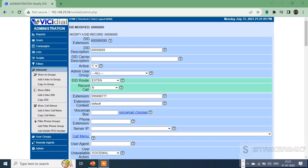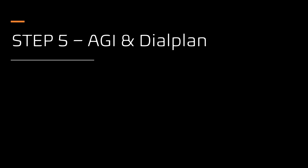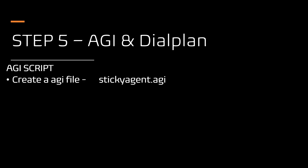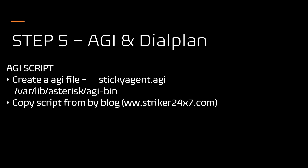Step 5: Creating the AGI script and custom dial plan. We are going to create a file named stickyagent.agi under /var/lib/asterisk/agi-bin/. The script is available in my blog — the link is provided in the description. We need to give the necessary permissions to the stickyagent.agi file using the chmod command.